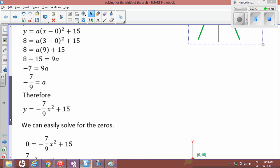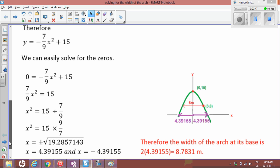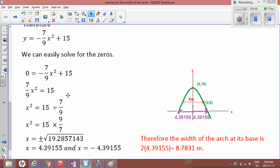Okay so to solve for the zeros it's quite simple in this form of the equation. We're just going to solve and isolate x². So first thing we do, we are going to subtract negative 7 over 9 from both sides, or add actually, add it to both sides. So it becomes 7 over 9 x² equals 15. Then to isolate the x² we're going to divide both sides by 7 over 9.